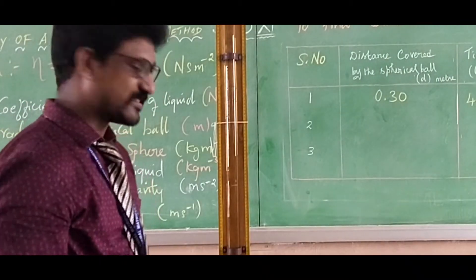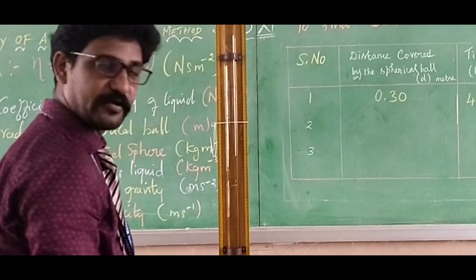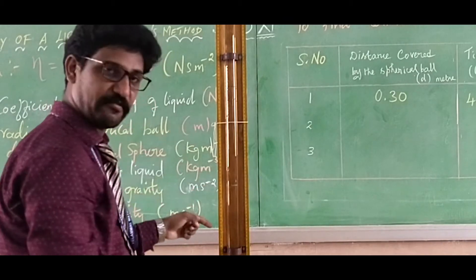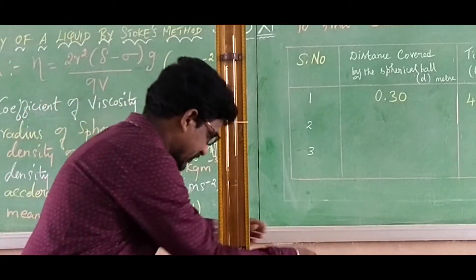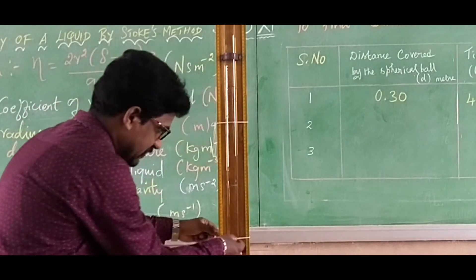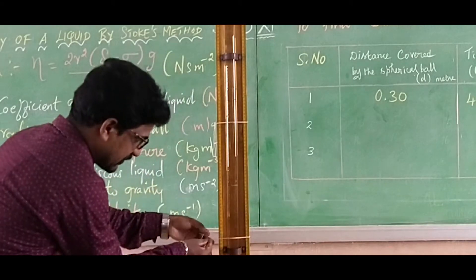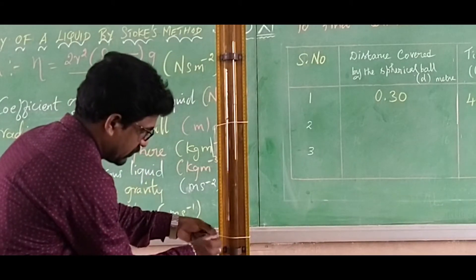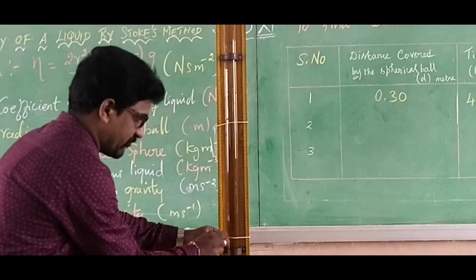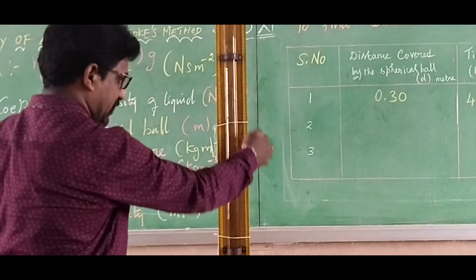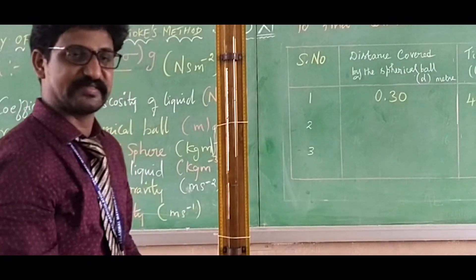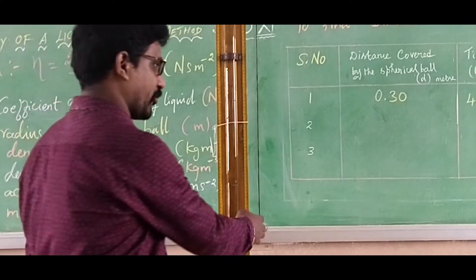The experiment is repeated for different distances traveled by the spherical ball. The reference point B is changed to 75 centimeters. The distance traveled by the spherical ball from reference point A to B is now 35 centimeters, which in meters is 0.35 meters.